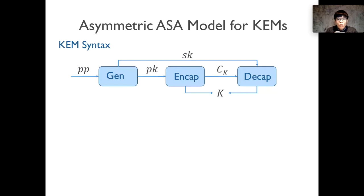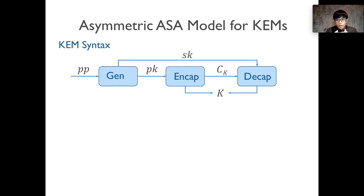Let's first recall the simplified syntax of a KEM. A KEM is defined by a tuple of algorithms: the key generation algorithm GEN generates the public-secret key pair; the encapsulation algorithm takes as input the public key and outputs the session key K together with the key ciphertext CK; and the decapsulation algorithm uses the secret key to decrypt the key ciphertext CK to recover the session key K.